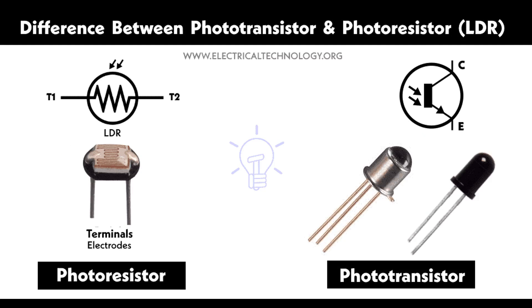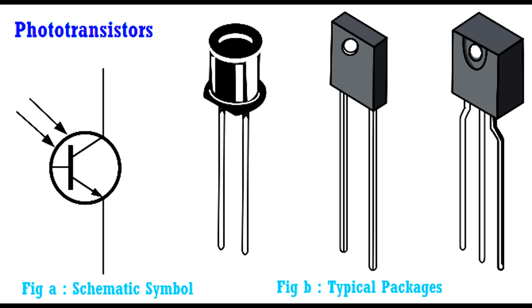Example light sensor circuit: In low light conditions, the base current is minimal or zero, resulting in a very low collector current. When exposed to light, the base current increases, causing a significant increase in the collector current. This change in current can be detected and used to trigger other components in the circuit, such as turning on a light or sounding an alarm.